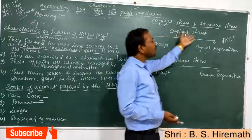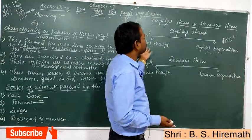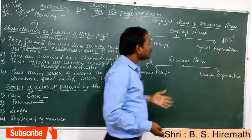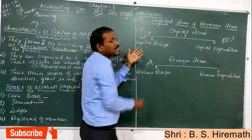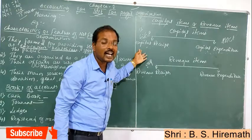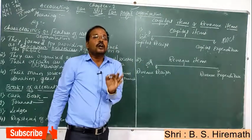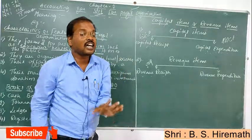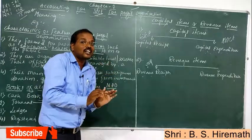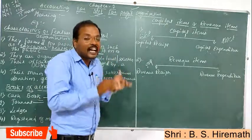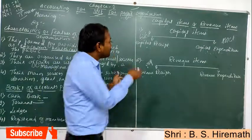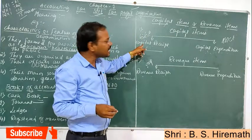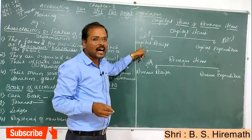There are mainly two types of capital items: capital receipt and capital expenditure. Capital receipt is also known as liabilities. These are received non-recurring in nature — not issued regularly. These items go to the liability side of the balance sheet.